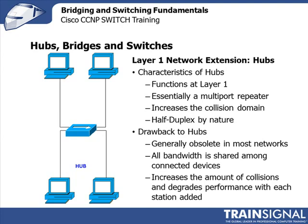There are many drawbacks to hubs. They're largely obsolete, though there are some niche areas where they might be useful, such as enabling traffic sniffing with a packet analyzer. Mostly you'll find them in closets among discarded equipment. All bandwidth is shared among devices, so with 10 devices on a hub each competes for traffic, and with 20 the bandwidth is essentially divided by 20. This increases collisions and degrades performance with each station added, which can cascade almost out of control if servers are involved. Hubs, though important in their day, are no longer considered relevant networking equipment.